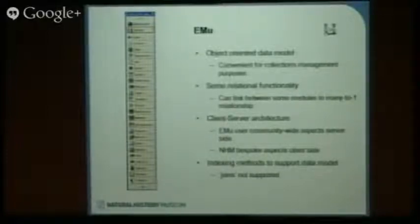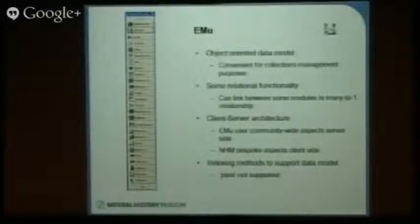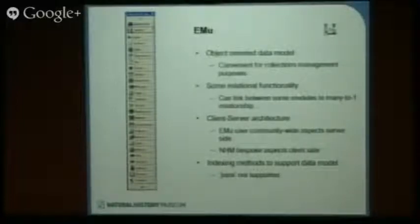Community-wide kinds of things — not just within the NHM, but also within the EMU user community — are centralized on the server side. Things that are bespoke to the NHM, in some cases, are located on the client. So a lot of our bespoke activity and customization has gone into our PC client rather than the central back-end. That's a gross oversimplification and the categorization is actually quite fuzzy. The indexing methods support the object-oriented model, but that has implications in that joins are not necessarily supported in the way that some people are used to.